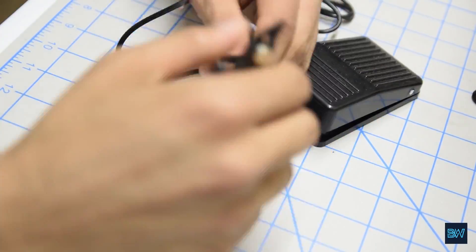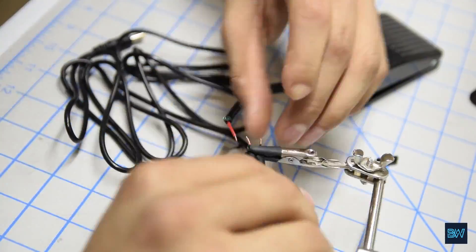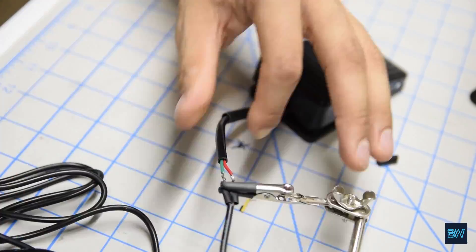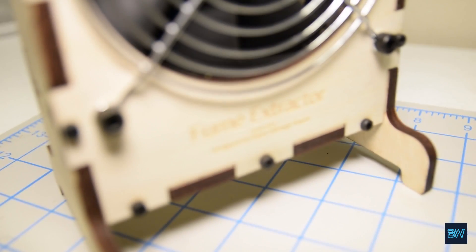Lastly, solder the DC plug with the foot lever switch on the normally open contacts. The fume extractor is now ready to be fired up.